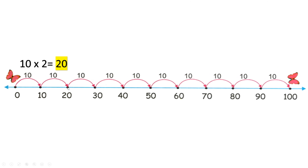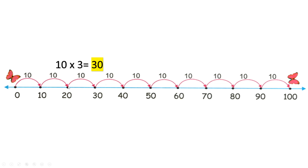Let's do another one together. Now we're going to take three hops of 10, starting at zero. One hop, two hops, three hops. We got to 30 in three hops. So we took three jumps of 10, or 10 times three equals 30.